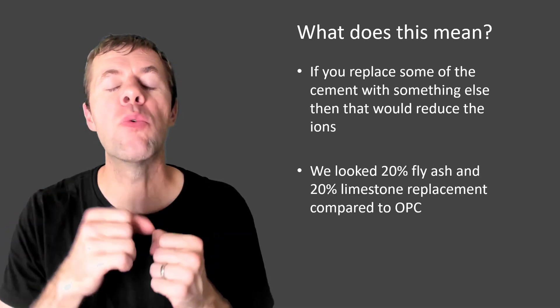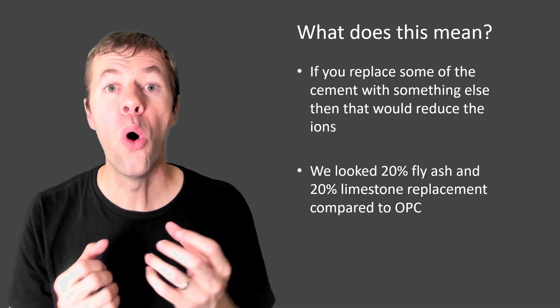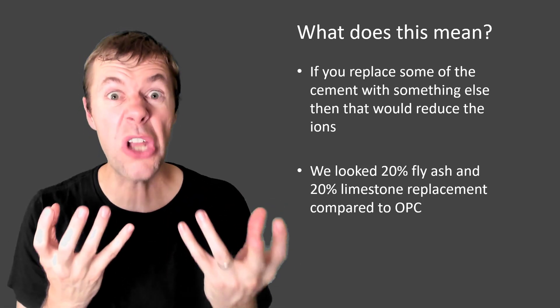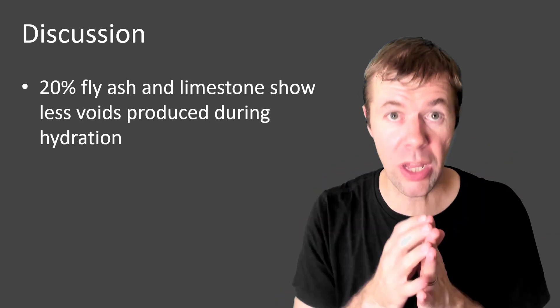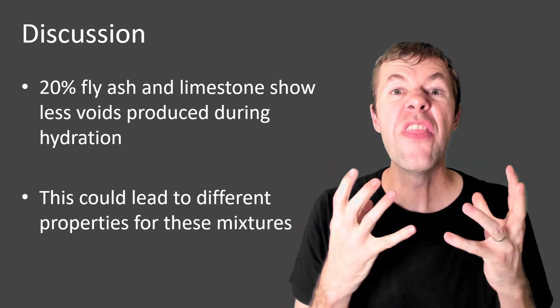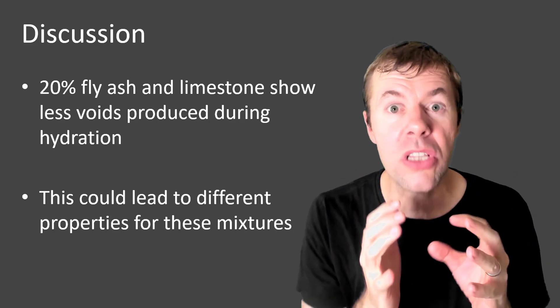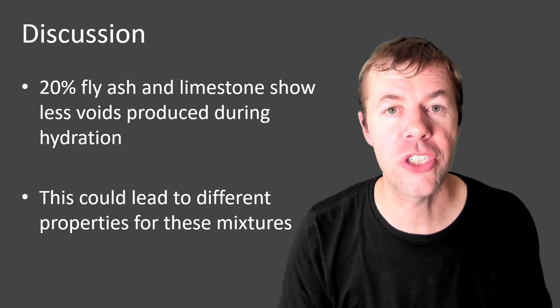But what if you replace some of the cement with fly ash or with limestone? Just limestone dust. And we did it in these experiments. And look, this is the straight Portland cement. It goes up, it goes down, it's flat. These are the ones with fly ash and with limestone, not near as much. Why? Because we've removed some of the cement and we've put this other material in. So the pore solution isn't as active. There's not as many ions swimming around. So there's not as much air that comes out of the solution. So the 20% fly ash and limestone show less voids produced during hydration. This could lead to different properties for these mixtures.